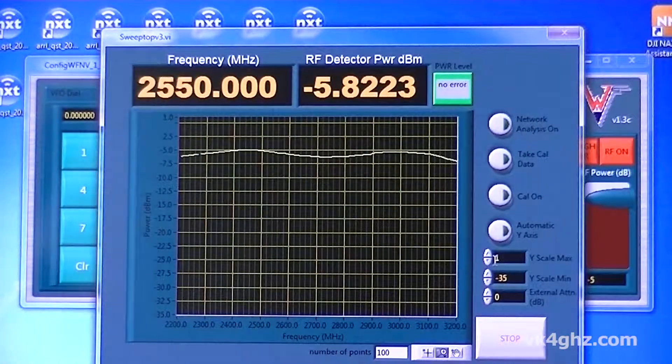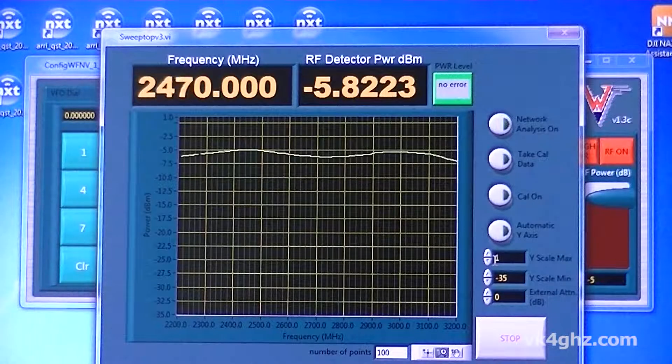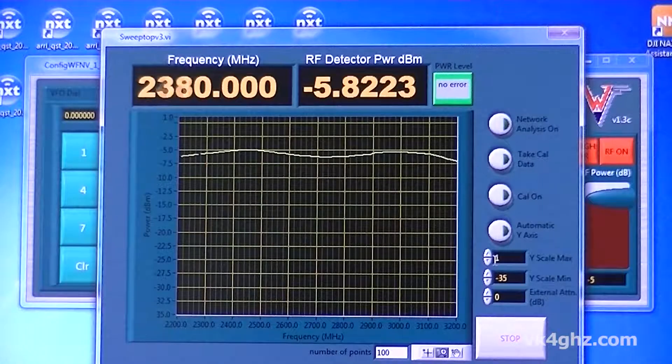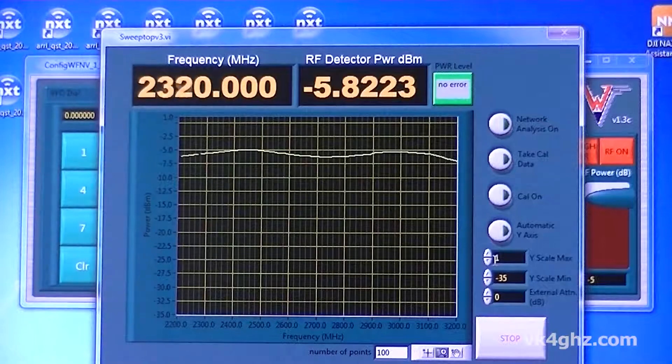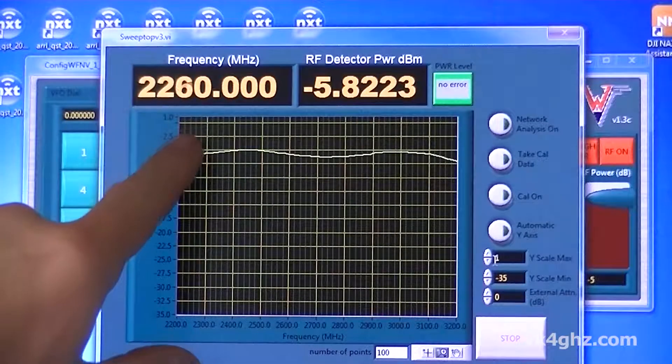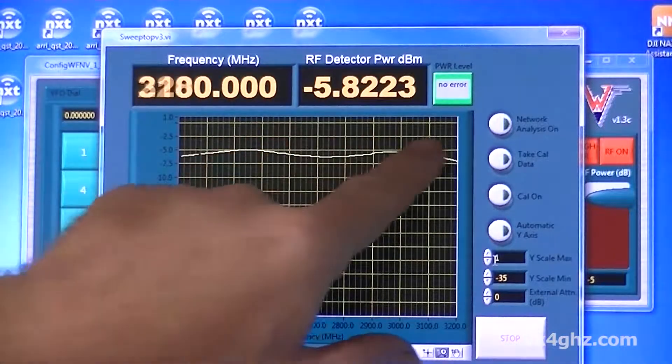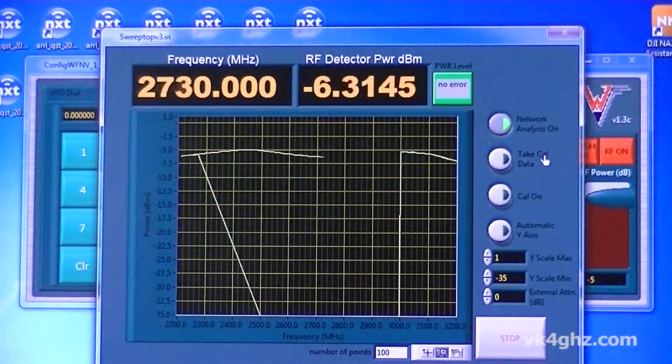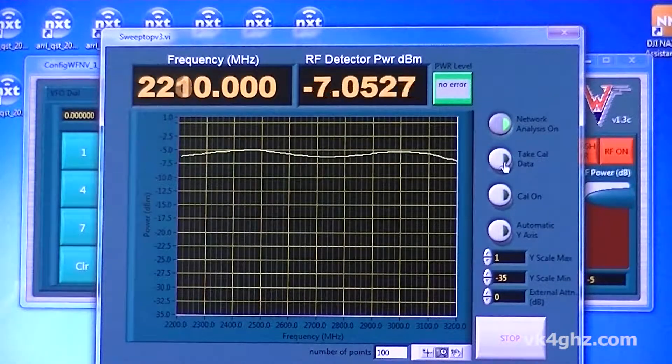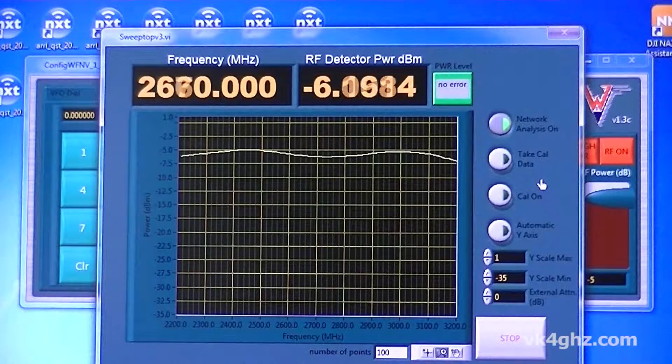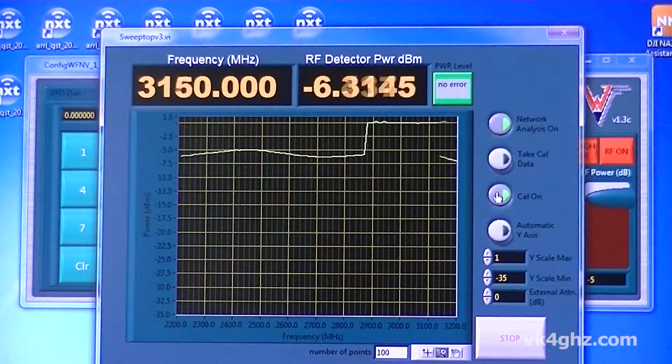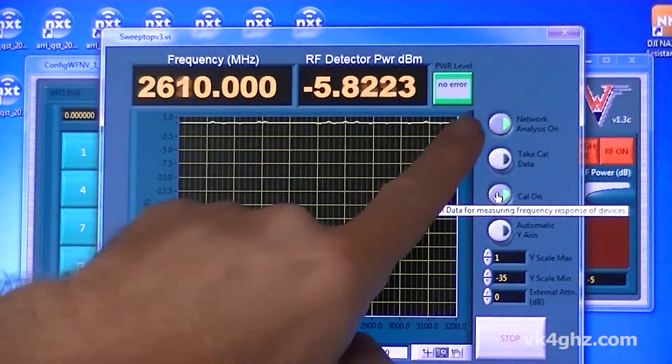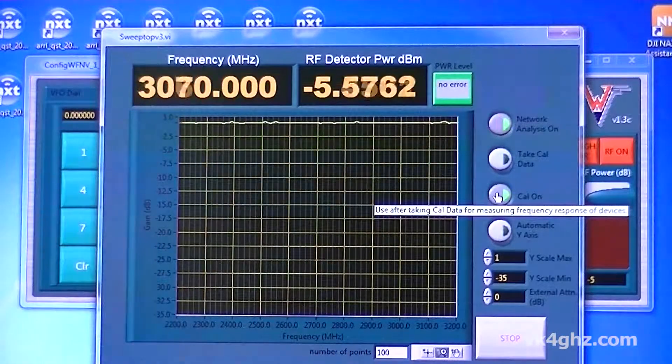Now with no device under test connected to that port where 100% of the power is being reflected, we'd expect to see a return loss of 0 dB. We're not quite seeing that yet because the system isn't calibrated, so just to level out those anomalies, we'll turn the network analysis on, take some calibration data, and apply that calibration data. So now the SynthMV power detector has been leveled out across its range.